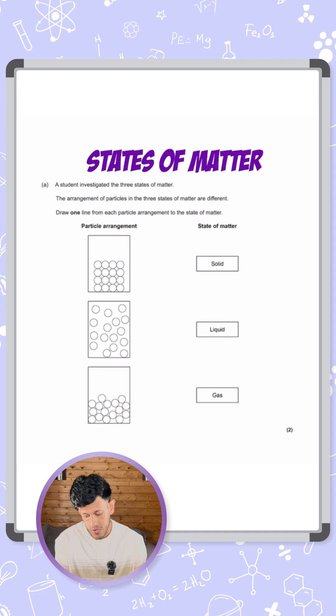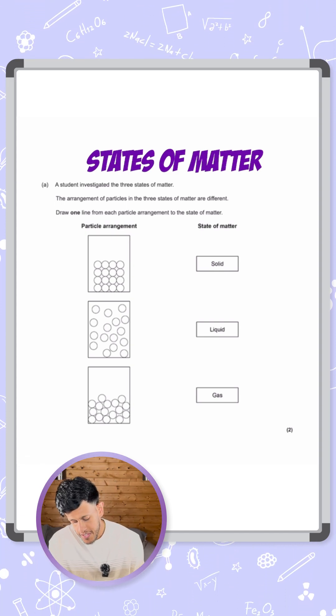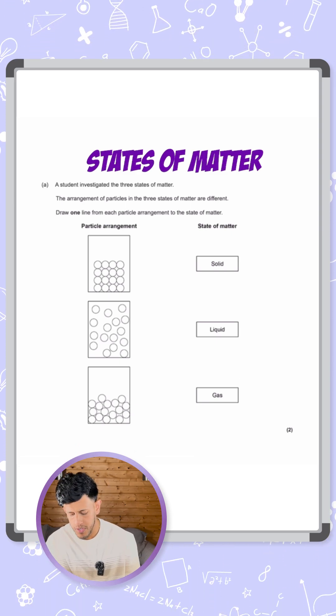This is for two marks, essentially one mark for if you get one right, and then for all three right is what's going to give you the two marks. We need to look at how the particles are in terms of how close they are, because that should help us determine what type of material it is.